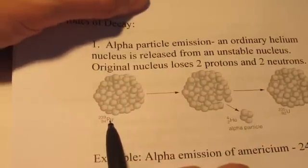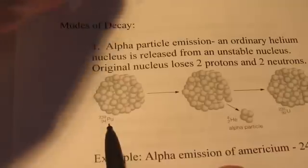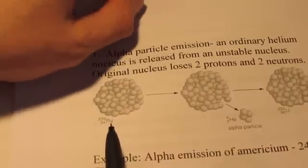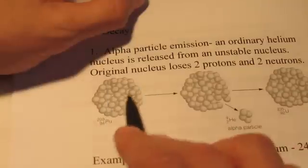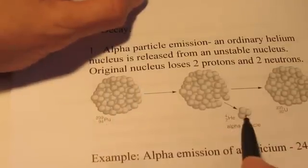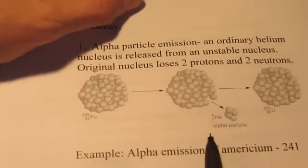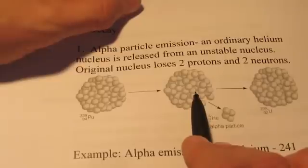Now, plutonium-239 is an example of an atom that will eject an alpha particle. And in an attempt to stabilize itself, this nucleus will eject two protons and two neutrons.